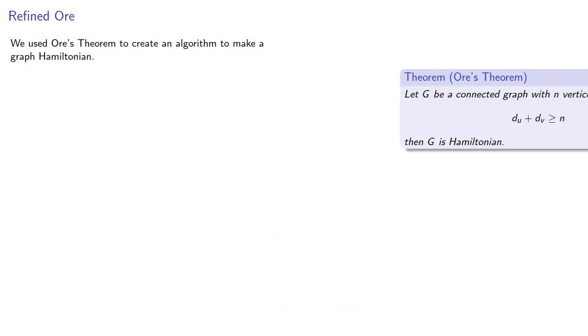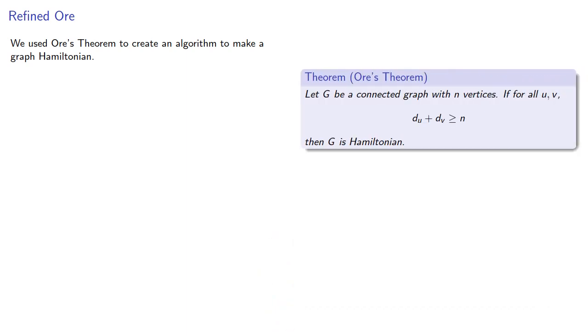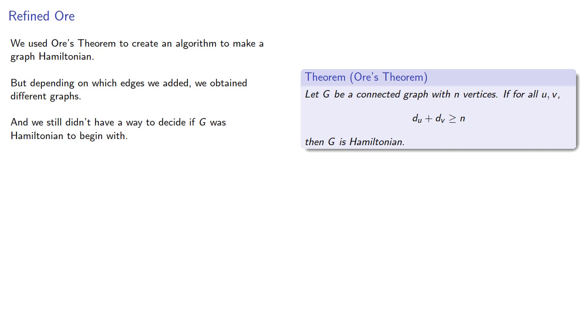We used Ore's theorem to create an algorithm to make a graph Hamiltonian. But depending on which edges we added, we obtained different graphs, and we still didn't have a way to decide if G was Hamiltonian to begin with.